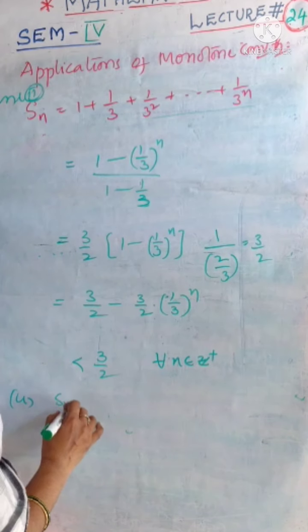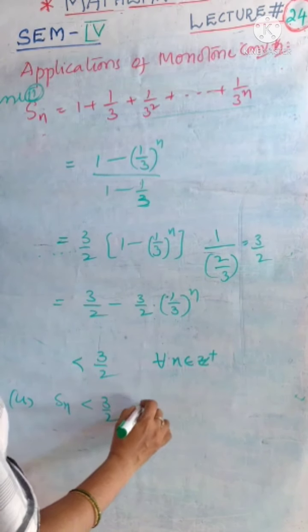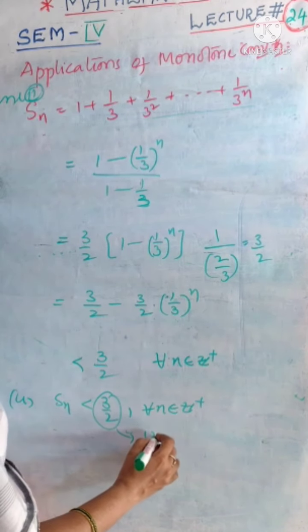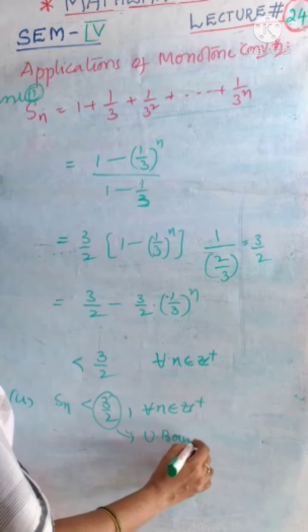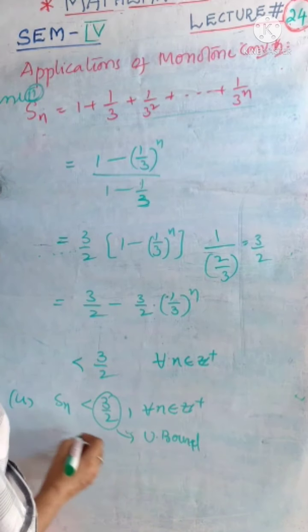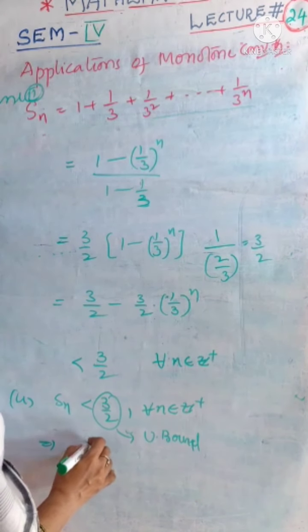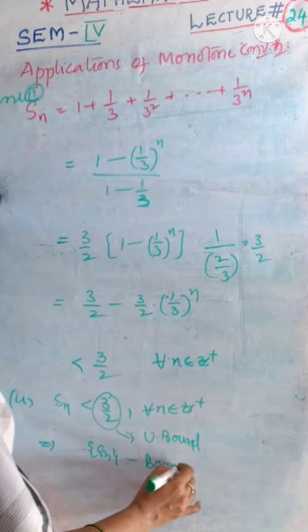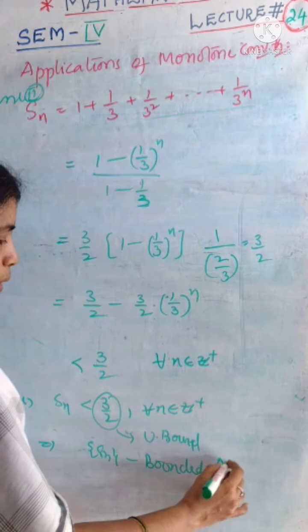That is, our sequence is less than 3 by 2 for every n. Therefore, 3 by 2 is an upper bound. Upper bound of the sequence means the sequence is bounded above.